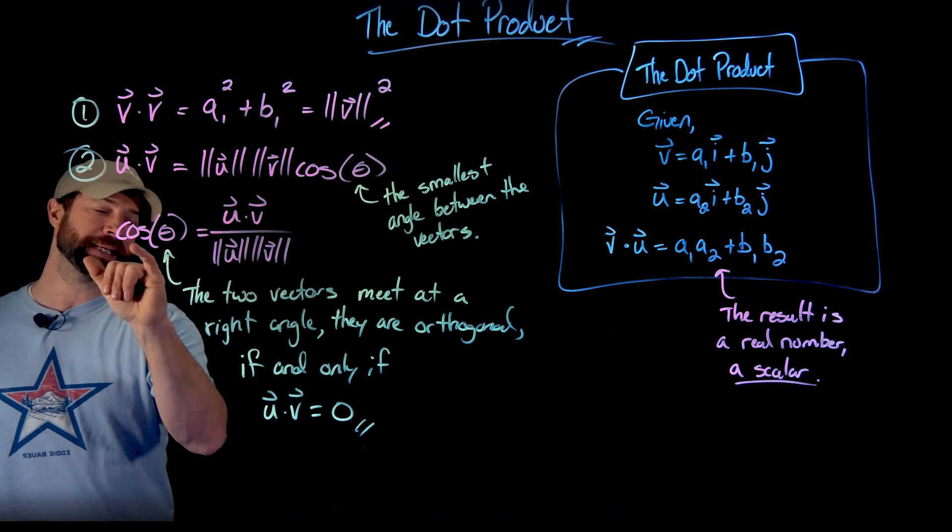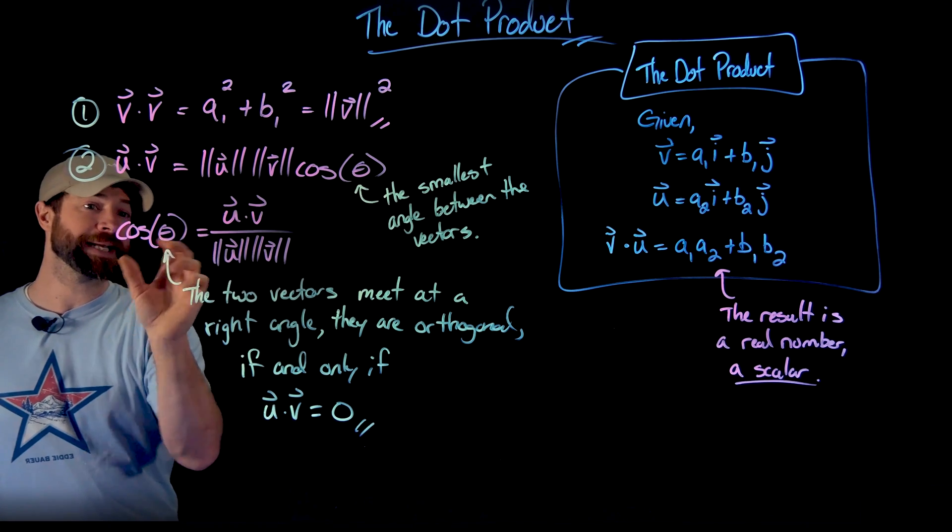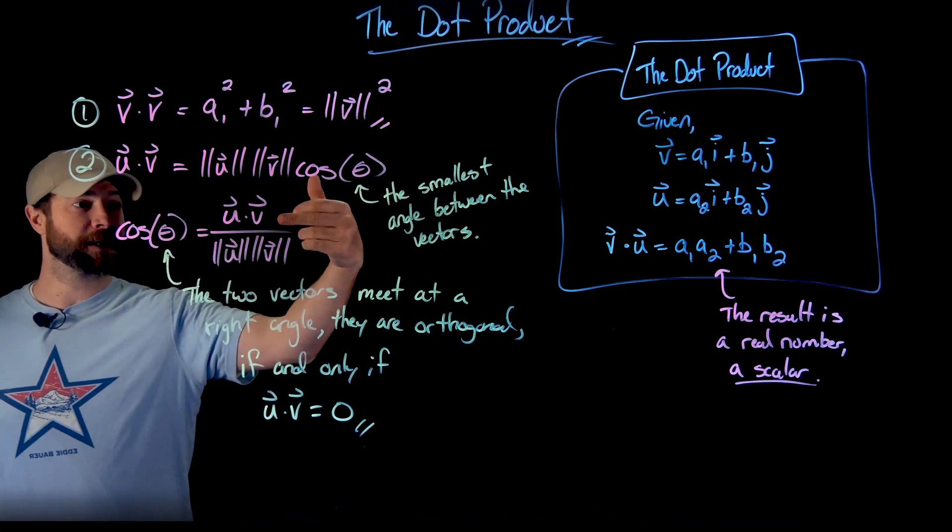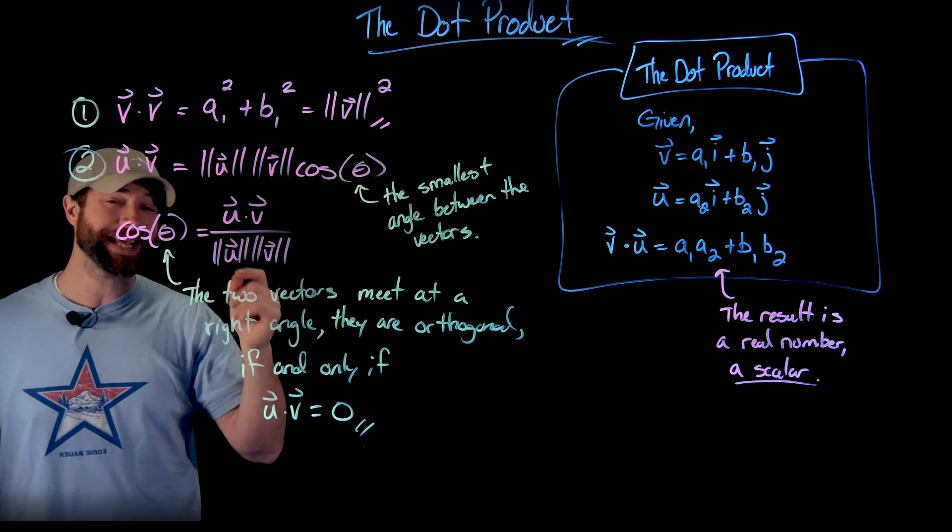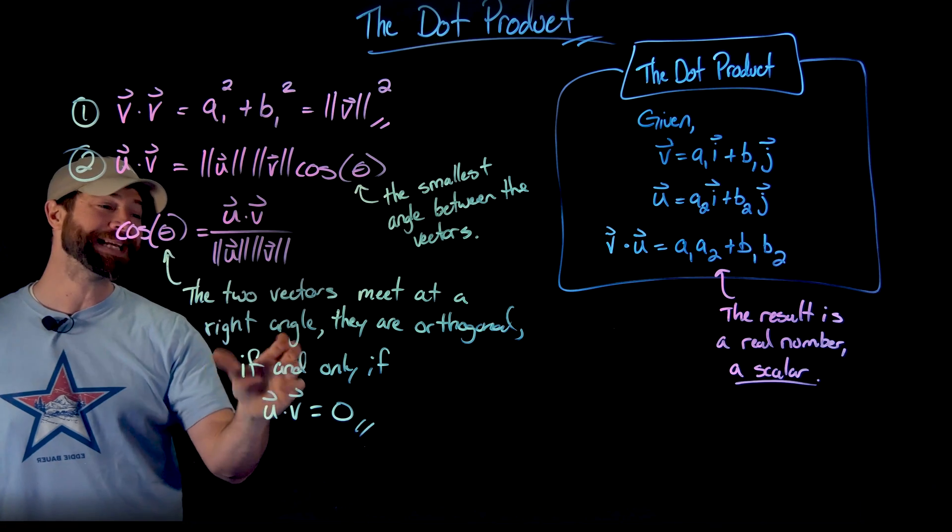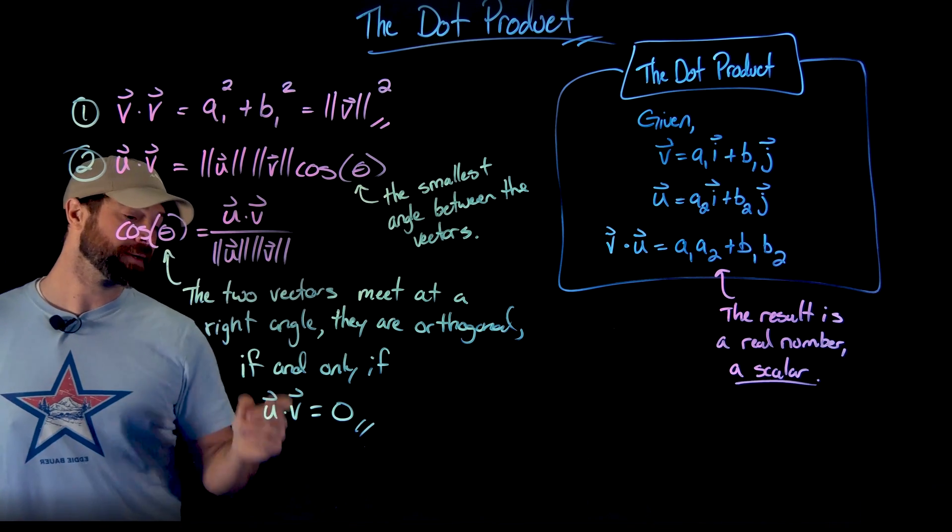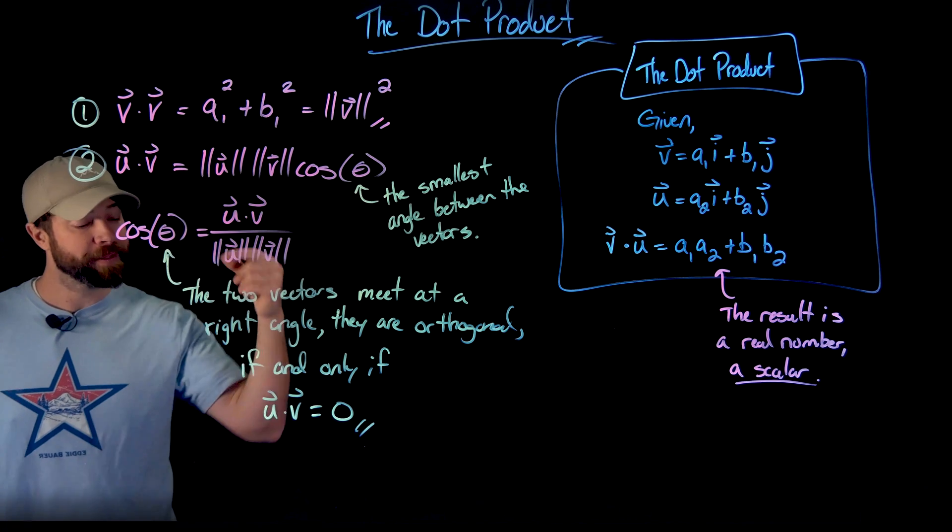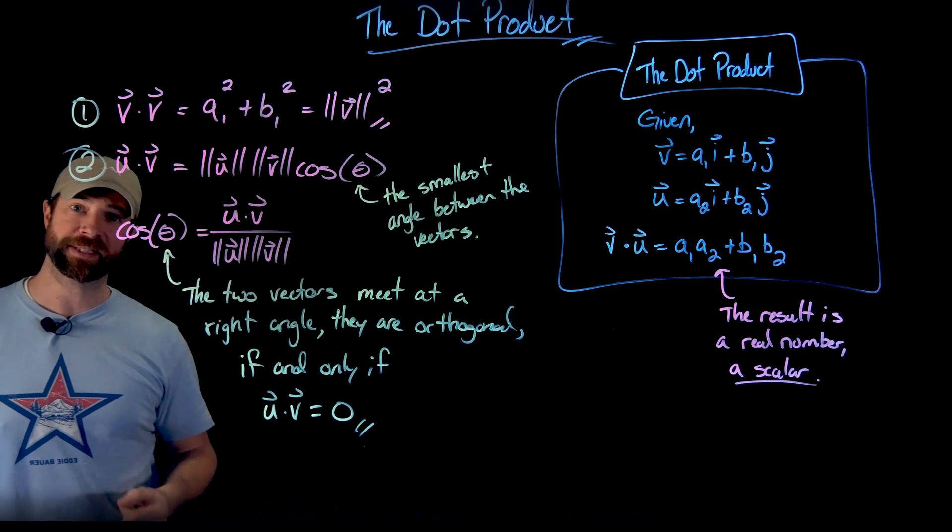But more importantly is the fact that the only time that cosine of an angle is going to be zero is if this dot product is zero. And the cosine of an angle is only zero if those two vectors meet at a 90 degree angle, or in other words, are orthogonal. So thus we can know if they meet at a 90 degree angle by simply taking the dot product and finding if it's equal to zero.